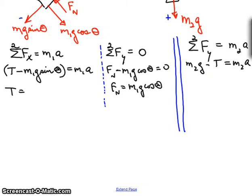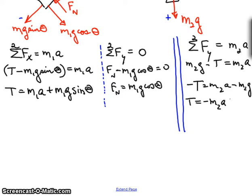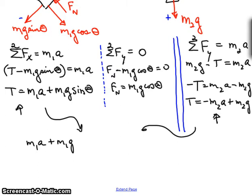Let's solve for the tension in both of them and then set the equations equal. So minus T equals m2a minus m2g. If I multiply everything by minus 1, I get T equals minus m2a plus m2g. Now I have an equation for T on my left and an equation for T on my right. I can set them equal to each other. So m1a plus m1g sine of the angle equals minus m2a plus m2g.